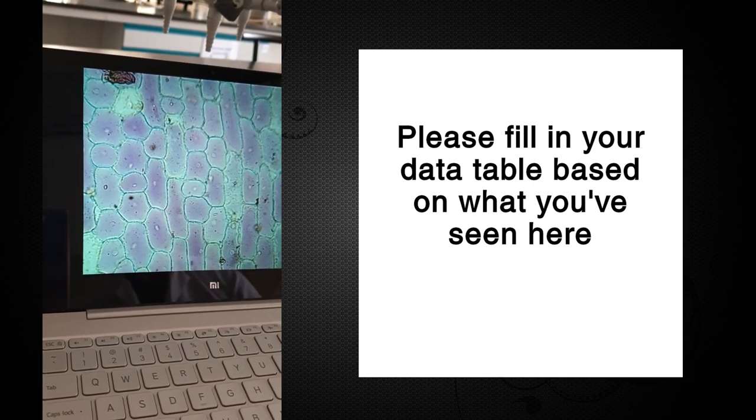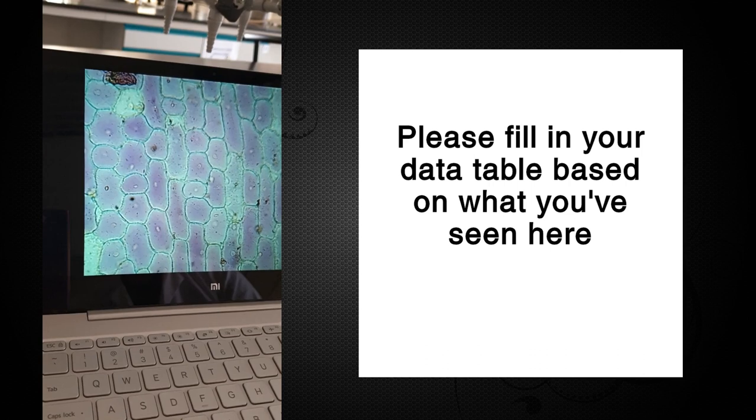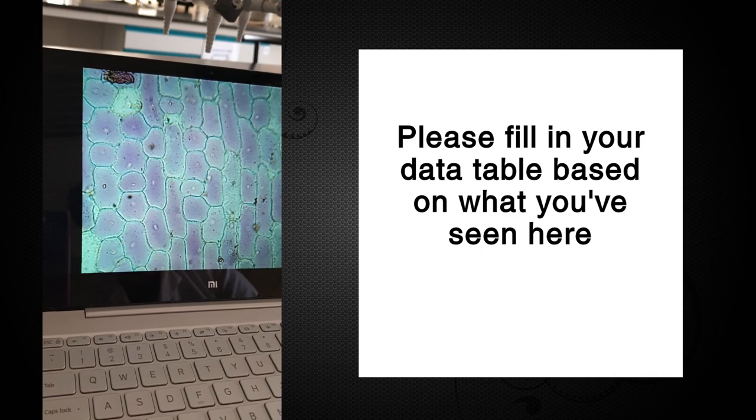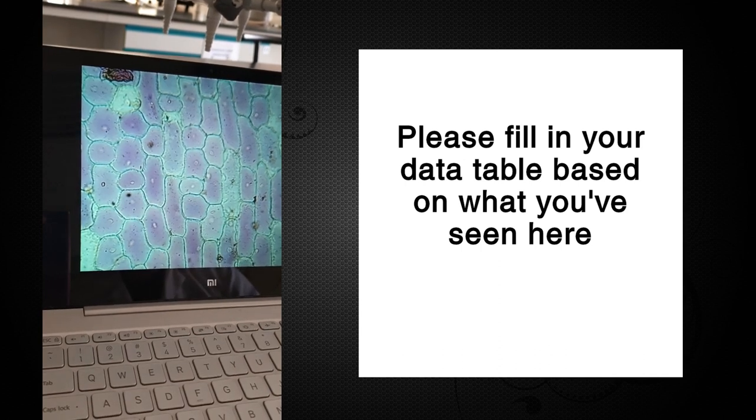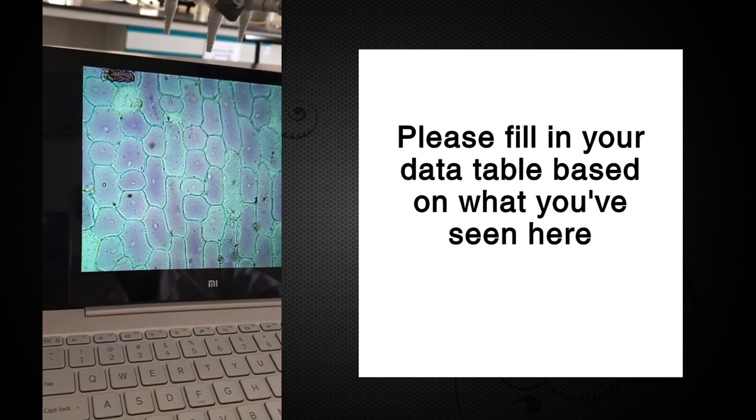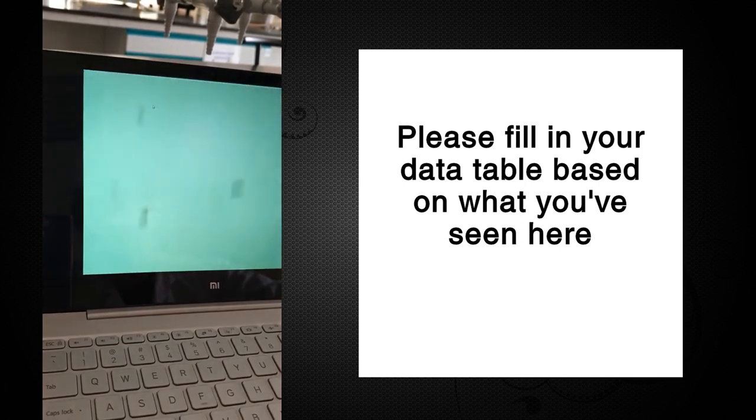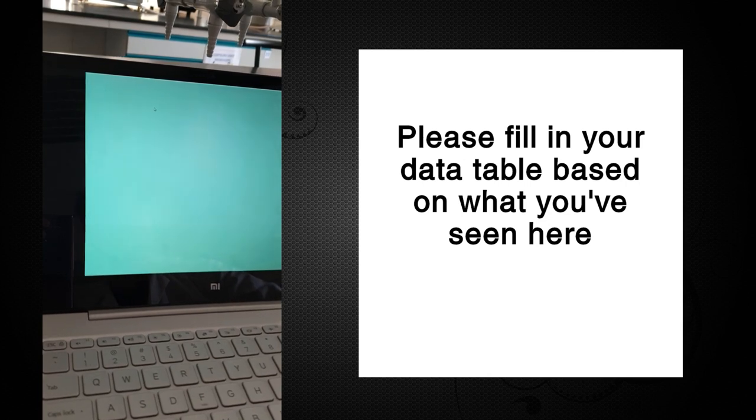Now let's switch over. This is the slide that is incubated in water. So these are onion cells in just a hypotonic solution. So they are a little swollen. Now, if we were to put in the 0.9% salt slide on here, it really wouldn't look that much different. So we're not going to do that.